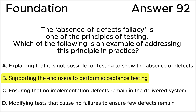The correct answer is B. According to the ISTQB syllabus, the absence of defect fallacy is concerned with the idea that ensuring correctness in accordance with the requirements — for example, verifying the absence of implementation defects — does not guarantee user satisfaction with the system. To address this, it is also necessary to validate that the system meets users' needs and expectations, fulfills business objectives, and outperforms competing systems. By supporting the end user to perform acceptance testing, it should be possible to validate that the system meets user needs and expectations.